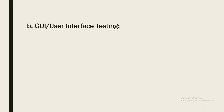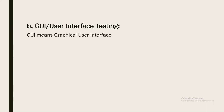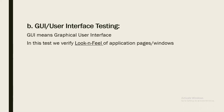First, GUI testing — GUI stands for Graphical User Interface, also called user interface testing. So what are we going to test? Graphical user interface means the look and feel of the application — how the application looks. We have to check the appearance of the application. Look and feel is the important keyword to use in this test.